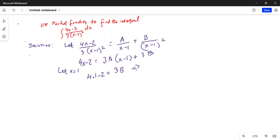Which leads to 4 minus 2 is 2 equals 3B. Divide by 3 on both sides, so B equals 2 over 3.